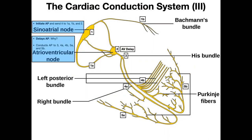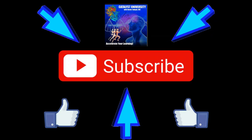Hopefully the cardiac conduction system makes sense to you. We looked at the structure and the reason why we have it. In the next video, we're going to talk about the pacemaker potential, which is the action potential generated by the sinoatrial node that eventually spreads into the muscle cells. Please make sure to like this video and subscribe to my channel for future videos and notifications. Thank you.